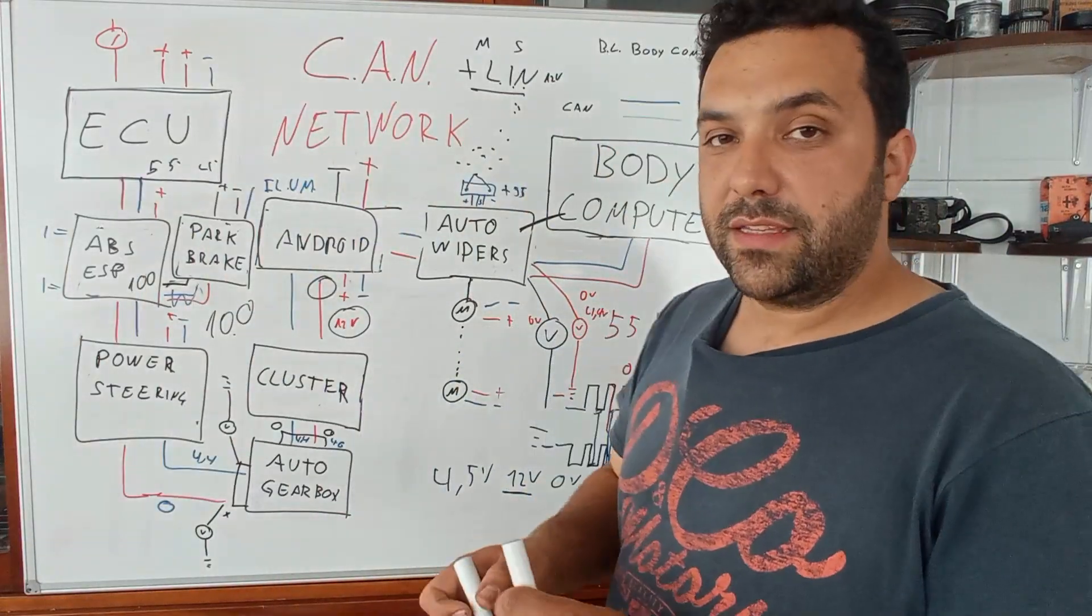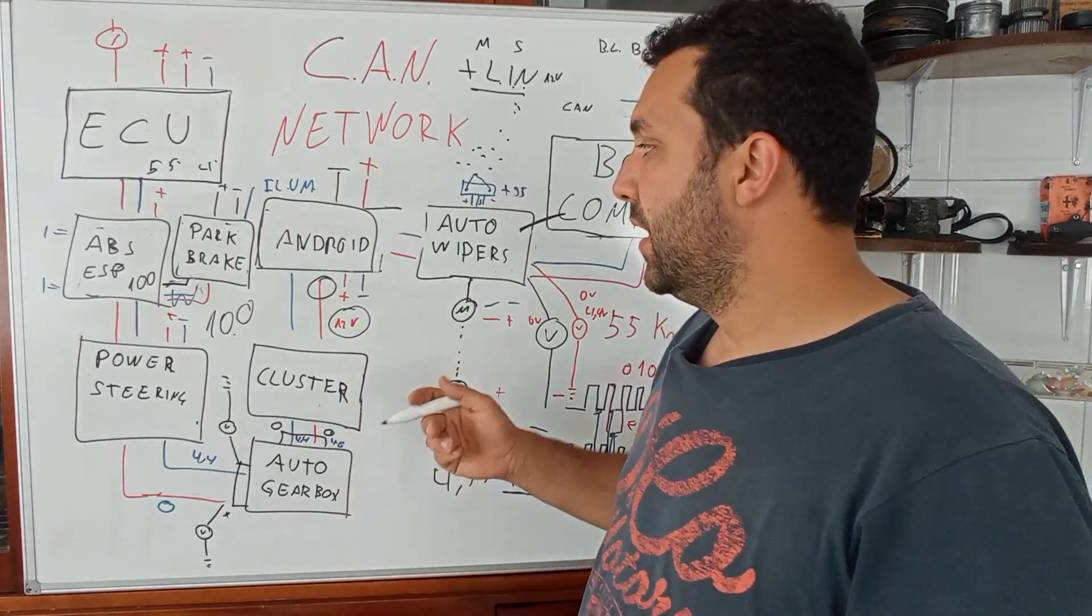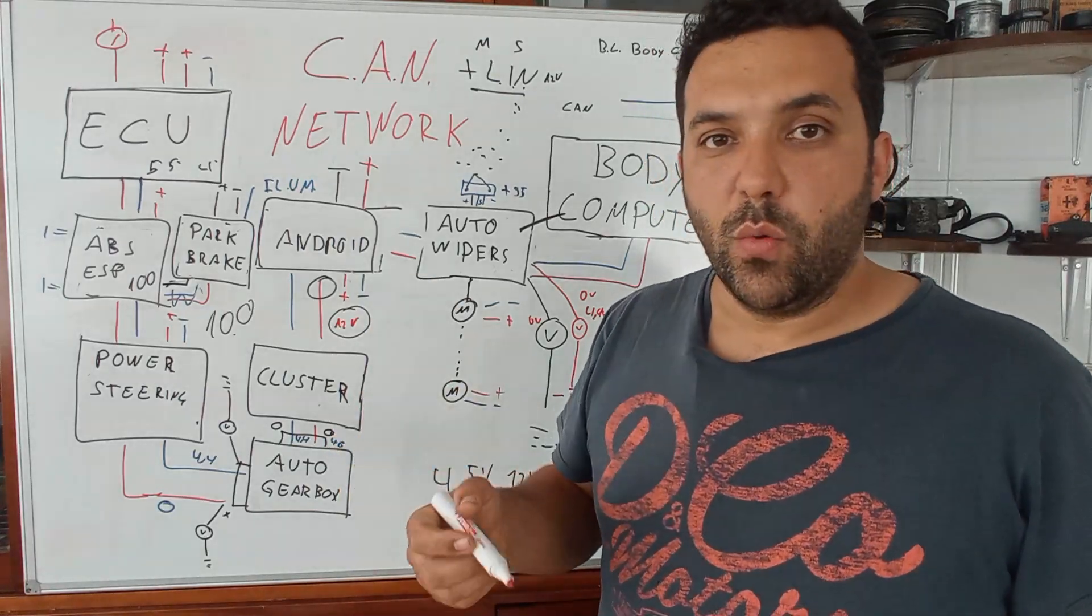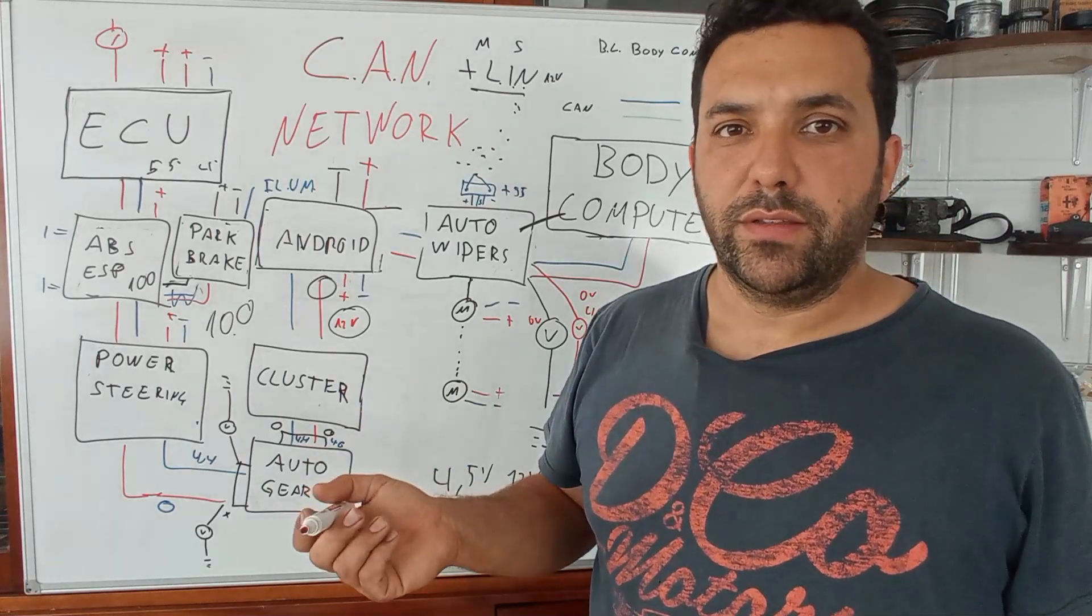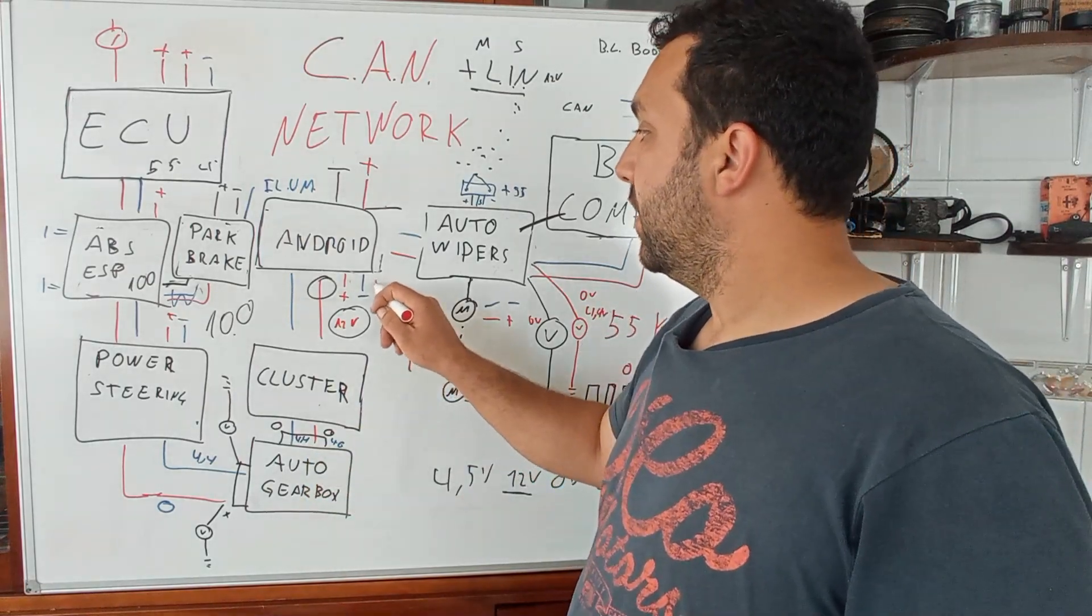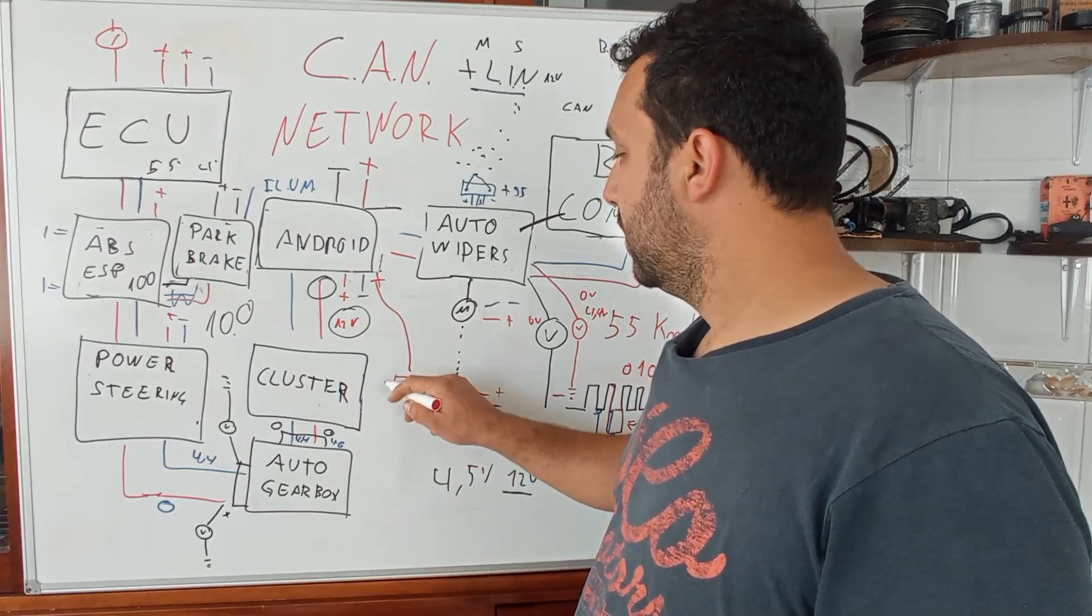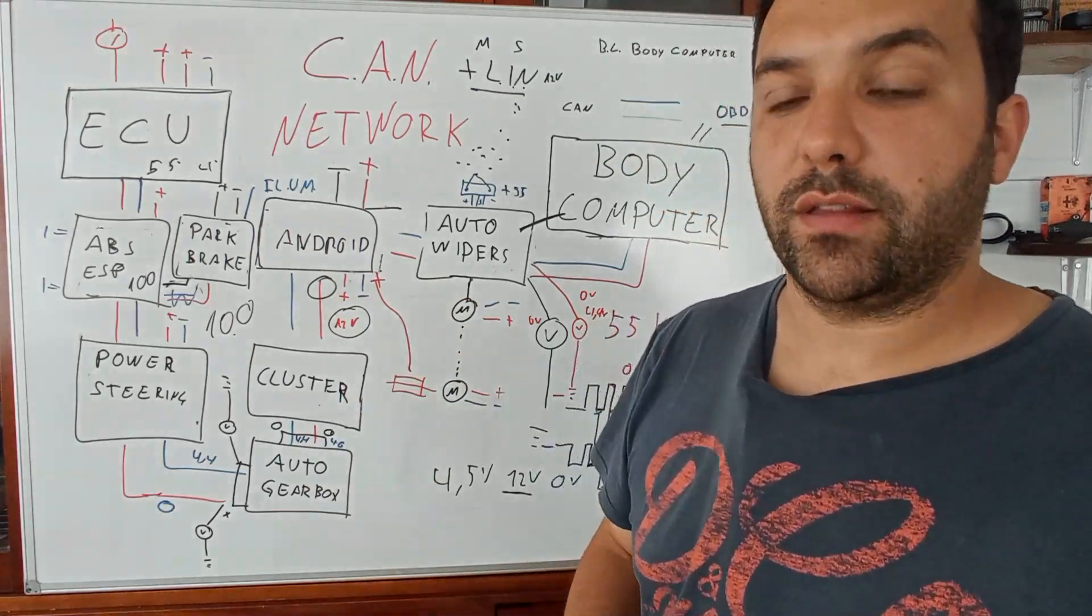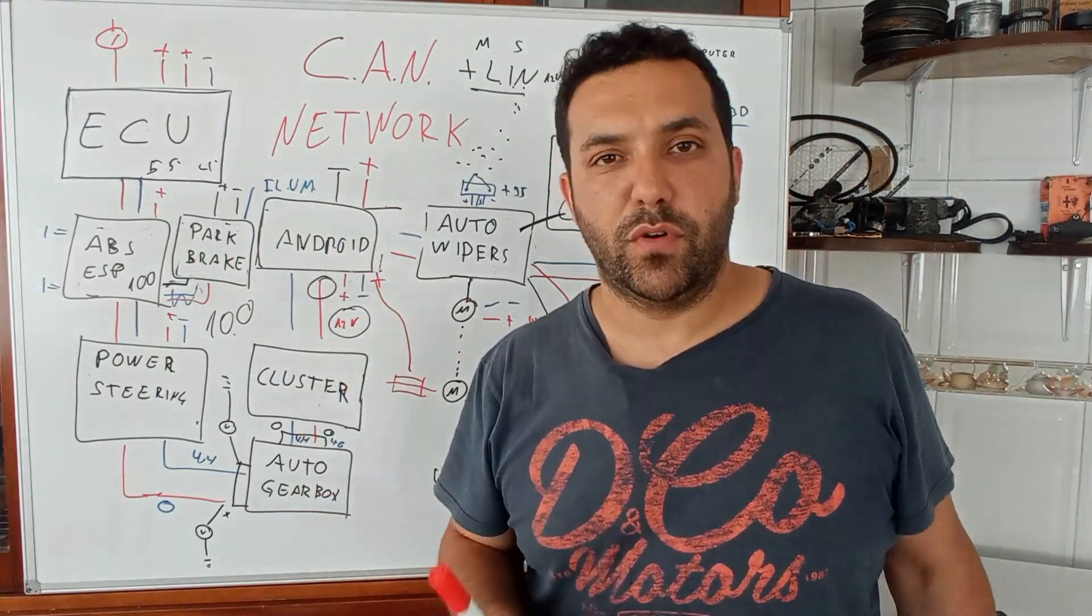In that case, what you should do is to find on your fuse box, for example, a 12 volt that switches on when you are switching on the ignition, for example the cigarette lighter. Now you have a positive from your fuse, and now you have your Android working correctly. If you want, I'll do a video just for that, more specific on the car, not only here on the whiteboard.